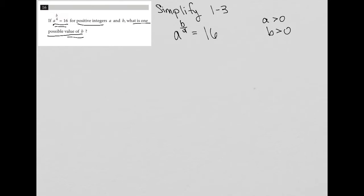First of all, it's not common that you'll be asked for one possible value. That just means there's more than one possible value. And I'll show you at least two options here for this question.